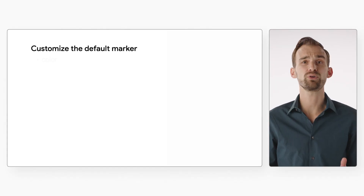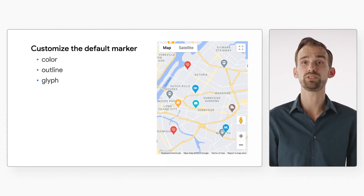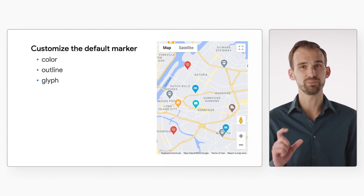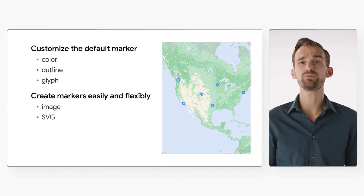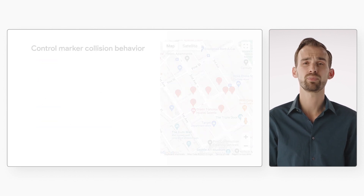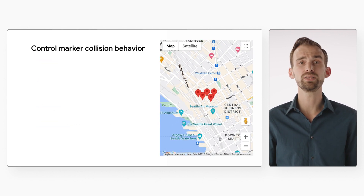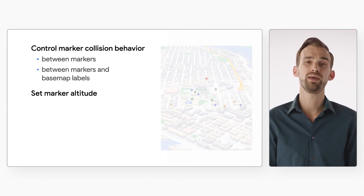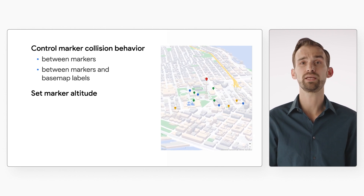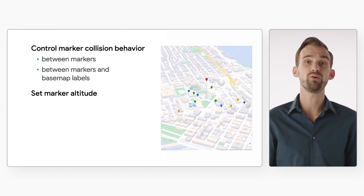Well, that changes today because we're announcing the preview release of Advanced Markers — a new library you can load with the Maps JavaScript API that introduces many new features, like support for changing the color, outline, and glyph of the default marker. That's the little icon inside the marker. Creating markers using images, SVGs, and custom HTML elements. Specifying how collisions with other markers, as well as labels on the base map, are handled. And setting the altitude of markers, for those of you who have been taking advantage of the new tilt feature of the vector base map.